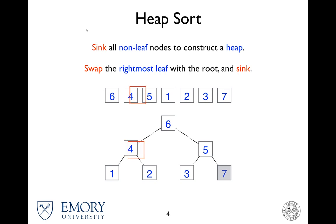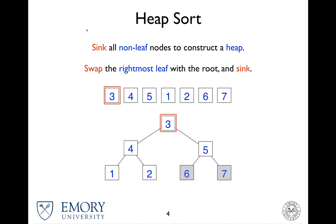Now we try to swap 3 with the root node, which is 6, so do the swap. And now 6 is invisible because it is already in order. So 3 now has to be sunk — 4 and 5 are compared, so 5 is the maximum, so swap.